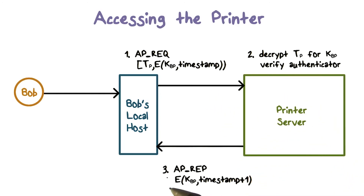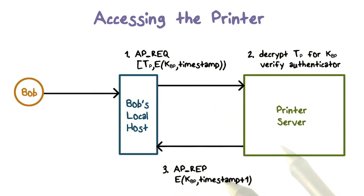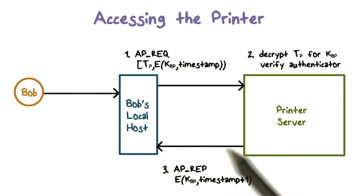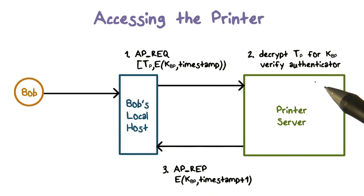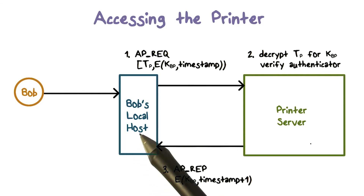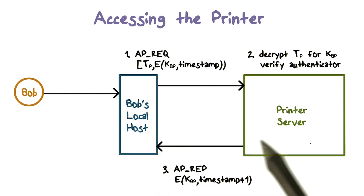The printer then sends a response to authenticate itself by adding one to the current timestamp and encrypting it using the shared key between Bob's local host and the printer. After these authentication steps, Bob's local host can send the print job to the printer.